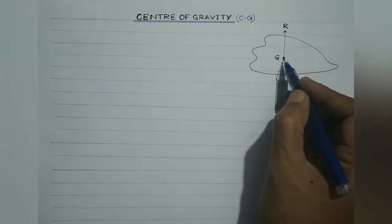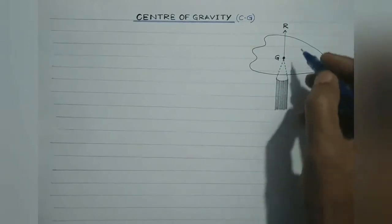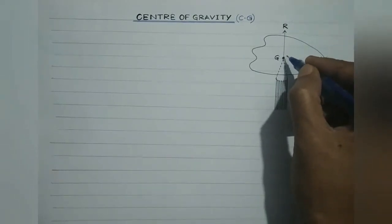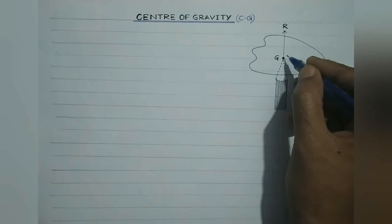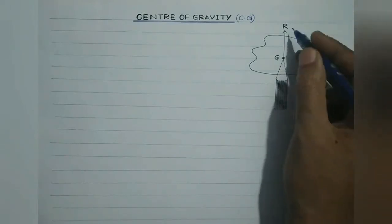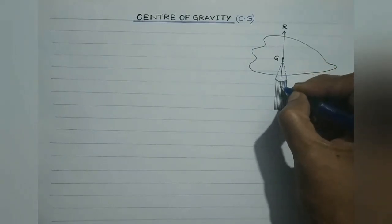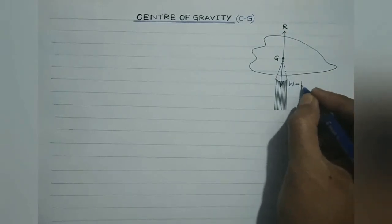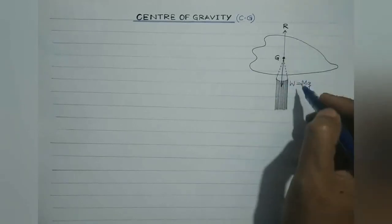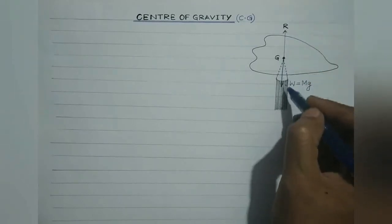This point of balance is the center of gravity of the cardboard. The tip of the pencil provides a vertical upward force due to which the cardboard is in mechanical equilibrium — the reaction of the tip is equal and opposite to the total weight of the cardboard, which is Mg.